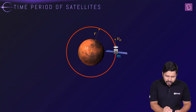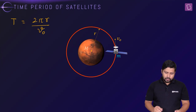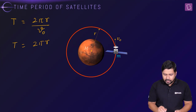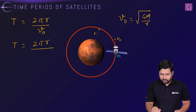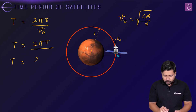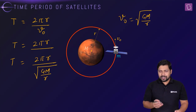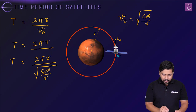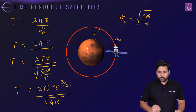The time period T = 2πr / v₀. Substituting the orbital velocity v₀ = √(GM/r), we get T = 2πr / √(GM/r). Simplifying, r in the numerator combines with r^(1/2) from the denominator to give r^(3/2), so T = 2π · r^(3/2) / √(GM).